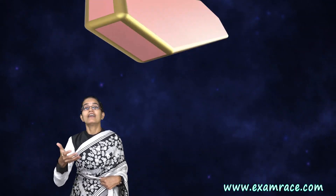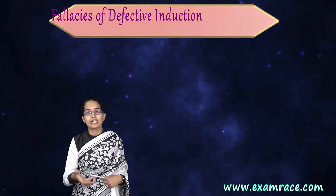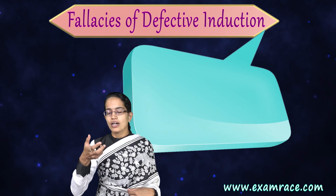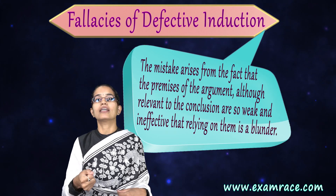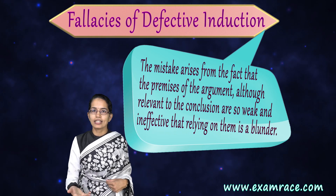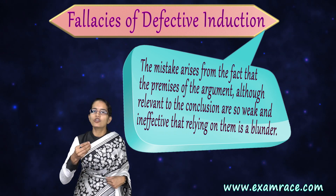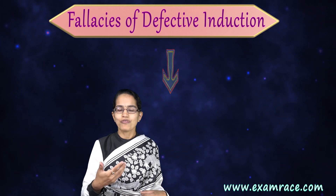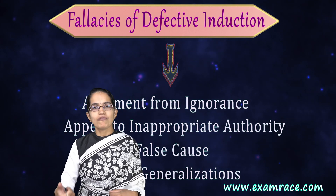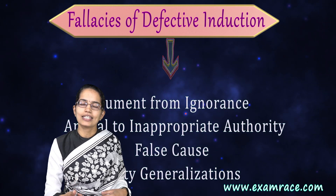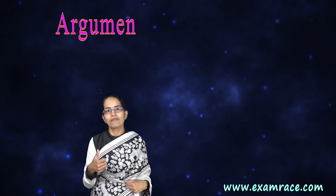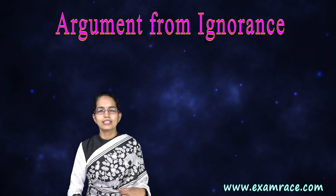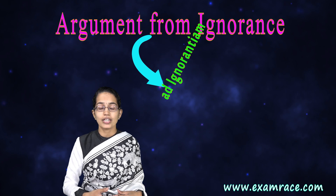Fallacies of defective induction arise because there are common mistakes in the premises of the arguments, and these common mistakes lead to the four kinds of fallacies we are discussing. The first one, as I said, is the argument from ignorance, and here we have another name for it.